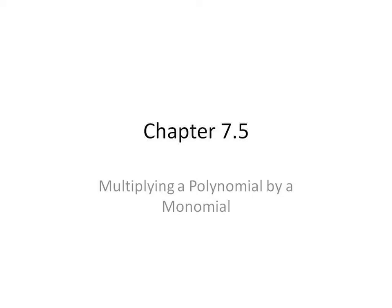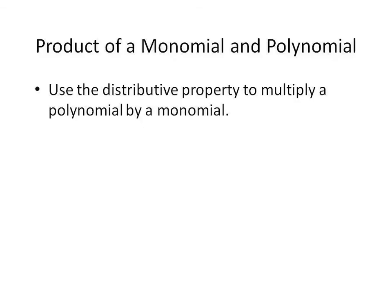Hello and welcome to Algebra 1 Chapter 7.5. Today we're going to be multiplying a polynomial by a monomial. To start out with the product of a polynomial and a monomial, we are going to be using the distributive property to multiply the polynomial by the monomial. This means we're going to have some polynomial and a monomial out front and you're just going to distribute it.